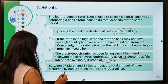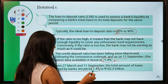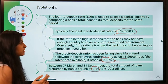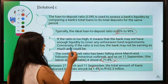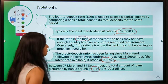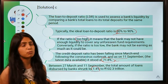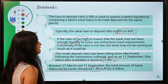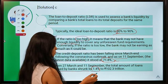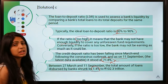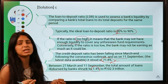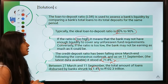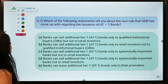Total loans disbursed by banks shrank by 1.4%, meaning banks made no new loans. If LDR is too high, the bank may not have enough liquidity. If it's too low — as in the current case — the bank is not lending enough to stimulate the economy and funds are not being optimally utilized.